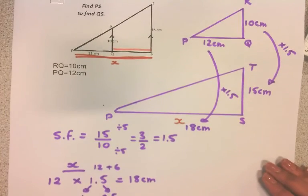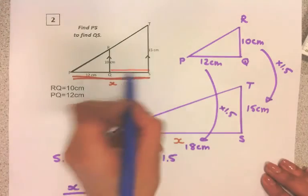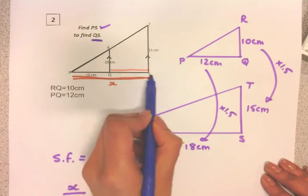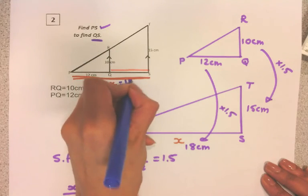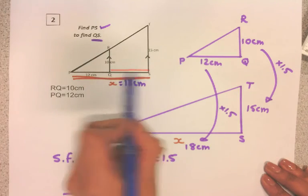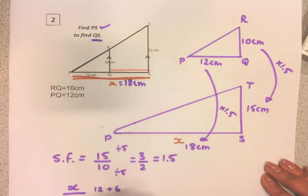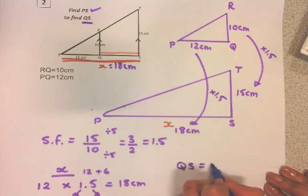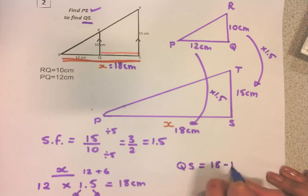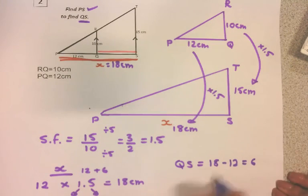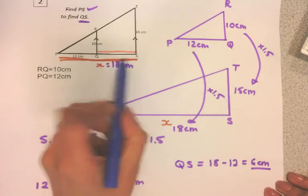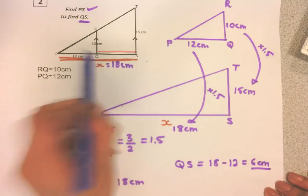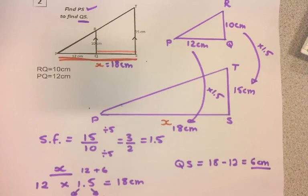Now all I need to find is QS. I found PS; I need to find QS. The whole thing is 18 centimeters, and this is 12 centimeters. So to find QS, it's 18 minus 12, which is 6 centimeters. PS was 18, QS is 6 centimeters. Thank you.